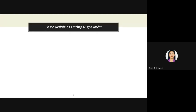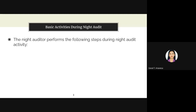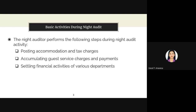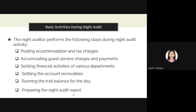The night audit performs the following steps: first, posting accommodation and tax charges; second, accumulating guest service charges and payments; third, settling financial activities of various departments; fourth, settling the accounts receivables; fifth, running the trial balance for the day; and lastly, preparing the night audit report. As a result, management can monitor the activity of every department on a daily basis, allowing a quick response to potential problems or losses and providing accurate information for business decisions.